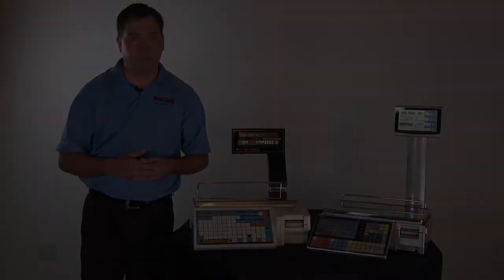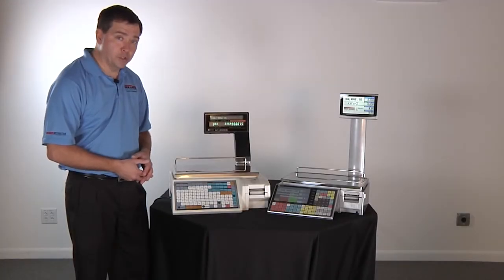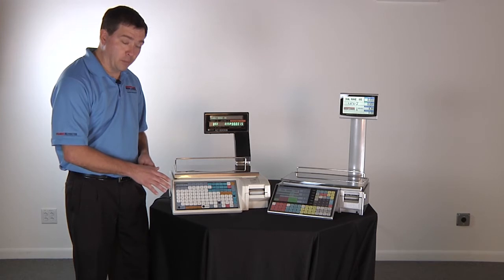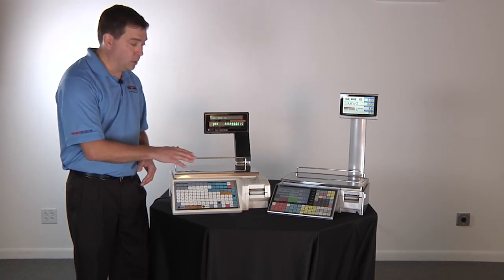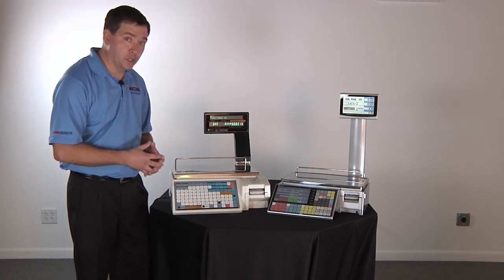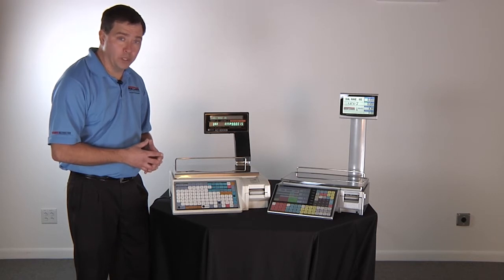Let me demonstrate. Here I have a previous generation single range scale that weighs by 0.01 and next to it I have the Ashida Uni 7 color touchscreen scale that weighs by 0.005.